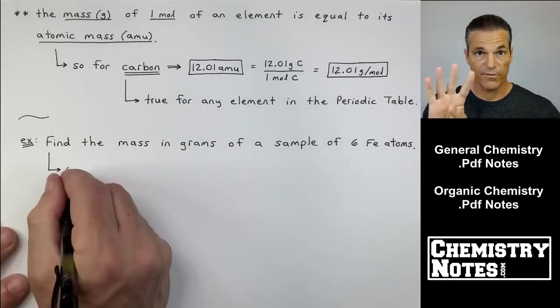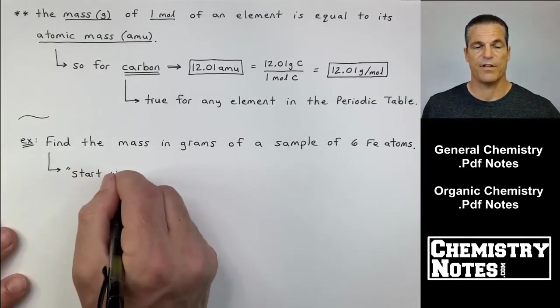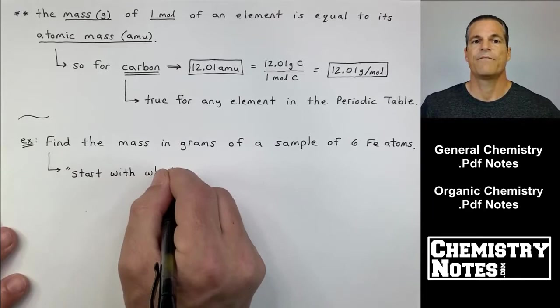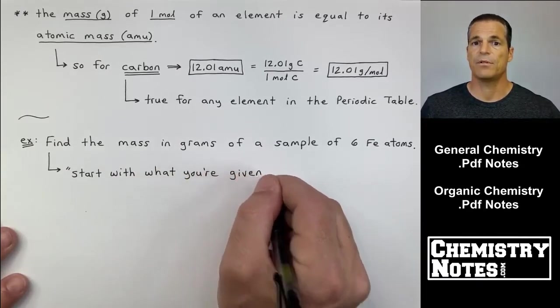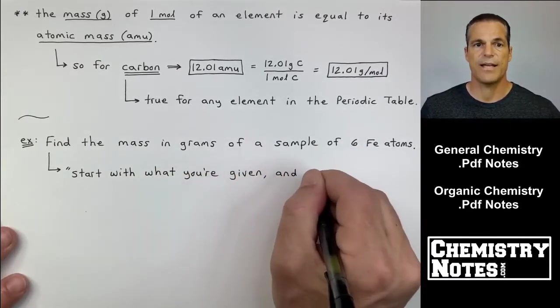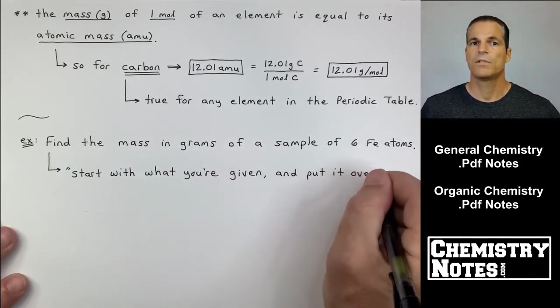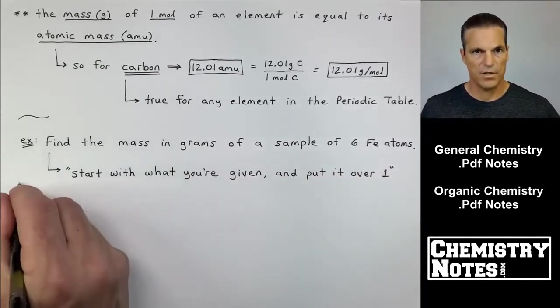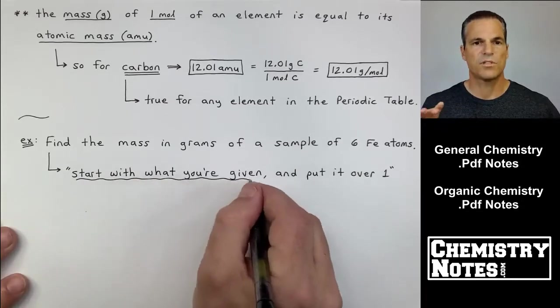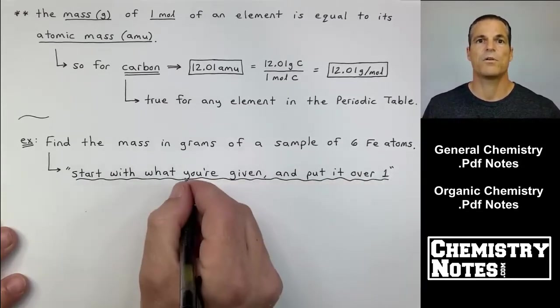Here's our first of four examples to round off this video. Example: Find the mass in grams of a sample of six iron atoms. Well, start with what you're given and put it over one. When in doubt, start with what you're given and put it over one.